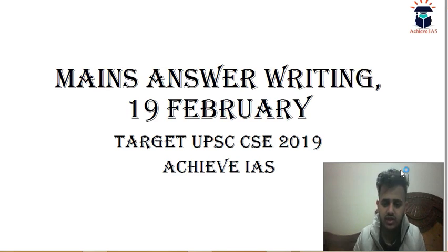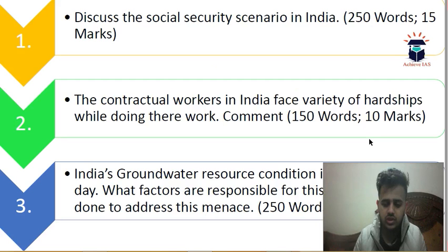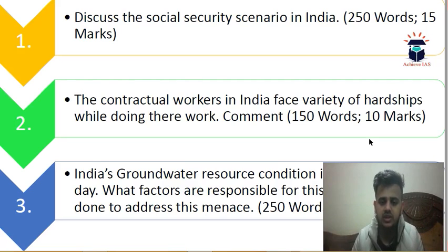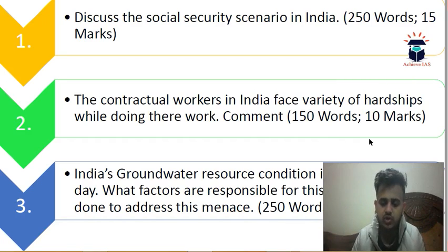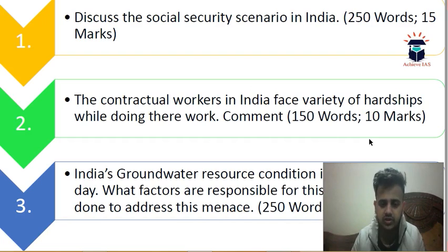Today is 19th February. The first question is: Discuss the social security scenario in India. You have to discuss how much social security has penetrated, where we are lacking, and what can be done about it. This is a complete question on the social security scenario in India. The word limit is 250 and marks allocated are 15.